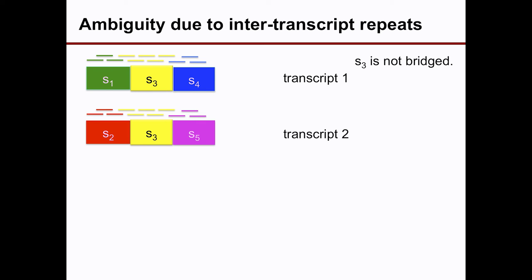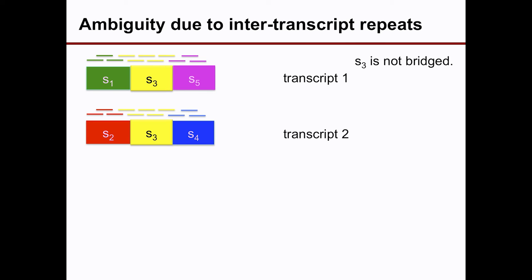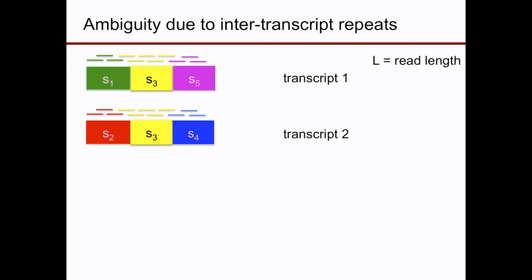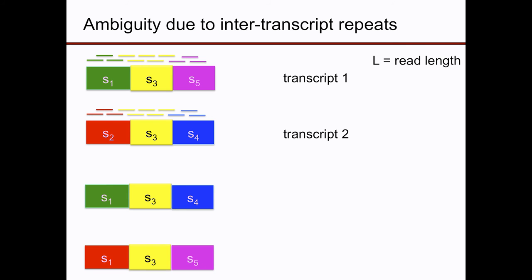There are two types of repeats in the RNA transcriptome. One is intra-transcript repeat — repeats along each transcript, similar to DNA repeats. But the more interesting and typically longer repeats are inter-transcript repeats: repeats across different transcripts or isoforms due to shared exons. These are typically the bottlenecks in the combinatorial problem. For example, exon S3 shared between two transcripts creates a repeat that, if not bridged by any reads, creates ambiguity — you can swap S4 and S5 and can't tell them apart. So you may have multiple solutions: four possible transcripts instead of two.